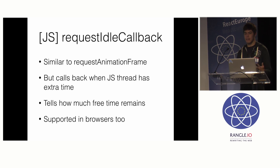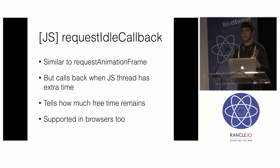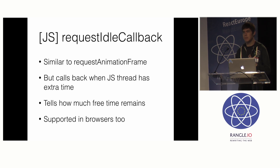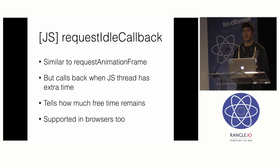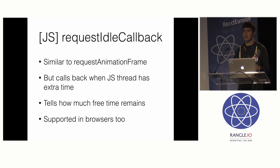Another API in React Native that solves some of these problems is called requestIdleCallback, implemented in React Native by Brent. It's similar to requestAnimationFrame — you pass in a callback, and it will be invoked when React Native says it has free time to render a frame. If it's not doing any work during a frame, you'll be notified that React Native has 16 milliseconds available for computation. You can repeatedly query React Native and ask how much time remains in the frame, allowing you to adjust how much work you perform. It's also supported in modern browsers, so libraries using requestIdleCallback will work in both React Native and the DOM.